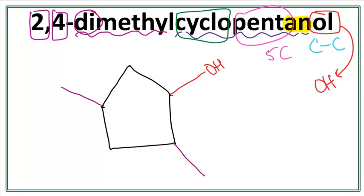So this is the structure for 2,4-dimethylcyclopentanol.